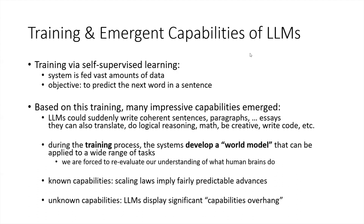This really forces us to re-evaluate what our human brains do, because there are some eerie parallels. The world model inherent in the most cutting-edge language models, such as GPT-4, is in many ways already broader and deeper than the world model I possess. I know a little about economics; GPT-4 knows quite a bit about economics, and also a lot about quantum physics, art, literature, and all kinds of things I don't know. In terms of breadth, it already has a broader world model than I have.